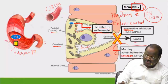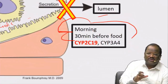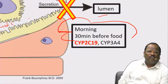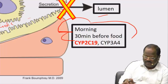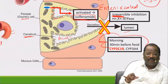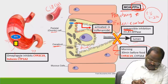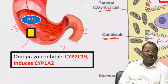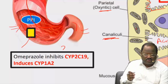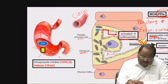Most proton pump blockers undergo metabolism by CYP2C19 and also CYP3A4 — mainly CYP2C19. An important point: among the proton pump blockers, omeprazole inhibits CYP2C19 and also induces CYP1A2.